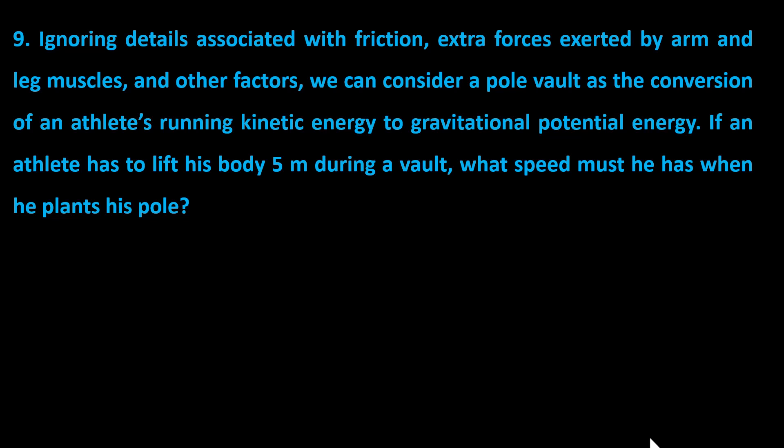If an athlete has to lift his body 5 meters during a vault, what speed must he have when he plants his pole? a. 5 meters per second, b. 10 meters per second, c. 15 meters per second, d. 20 meters per second.